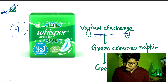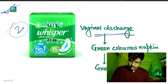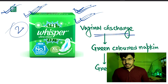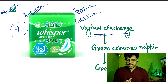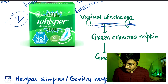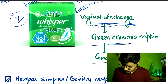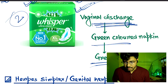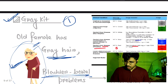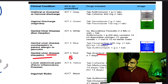Vaginal discharge uses kit number two. To remember this, picture sanitary napkins used for vaginal discharge. The kit is the green kit, kit number two.